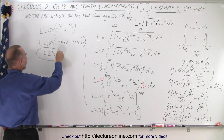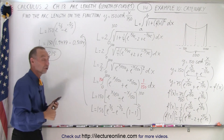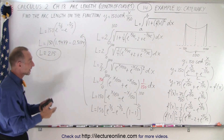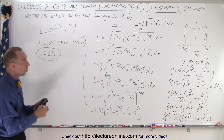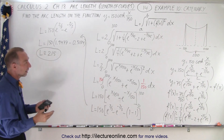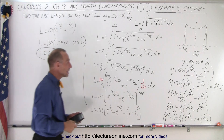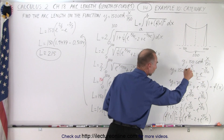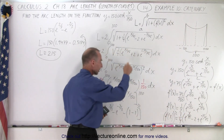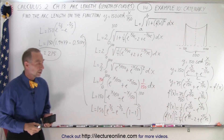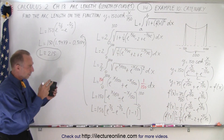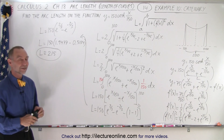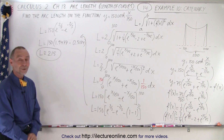The length is approximately 215 — feet or meters, whatever units we used. That's how we find the length of a hanging cable, also called the catenary. Notice the technique: we write the hyperbolic cosine as an exponential function and follow the same arc length process as before. The numbers are more complex, but the method is exactly the same.